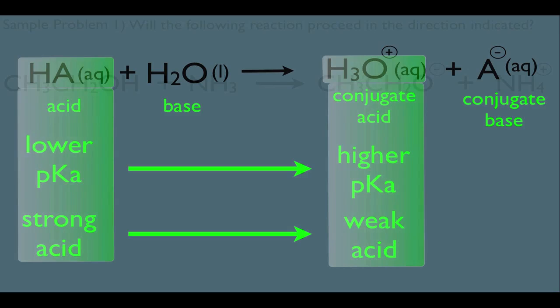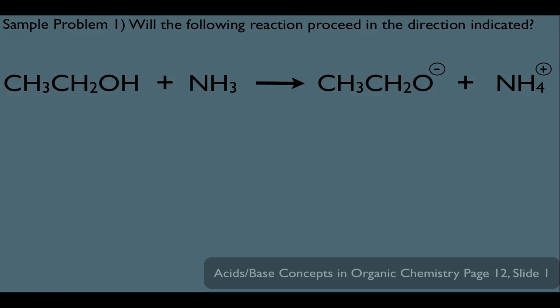Let's look at a sample problem. Will the following reaction proceed in the direction indicated, from left to right? The first thing we should do is get to know our reaction. Notice this species, CH3CH2OH, started out like this but then turned into CH3CH2O-. It looks like he lost a hydrogen, or donated a hydrogen. Using the Bronsted and Lowry definition, that means he's behaving as the acid. This must be his conjugate base, and NH3 must be the base here on the reactant side, making NH4+ the conjugate acid.